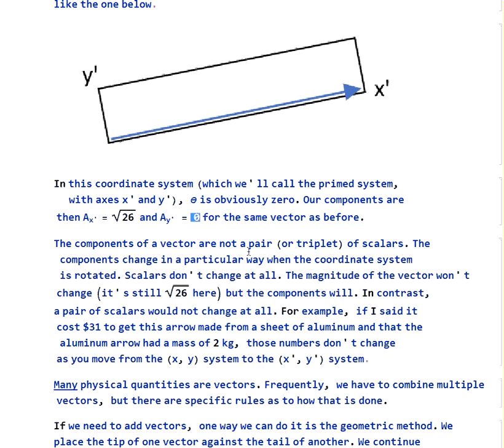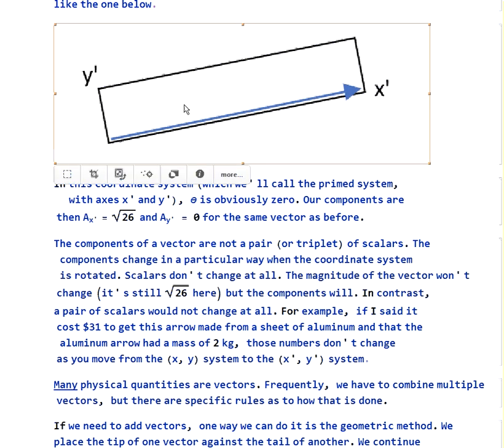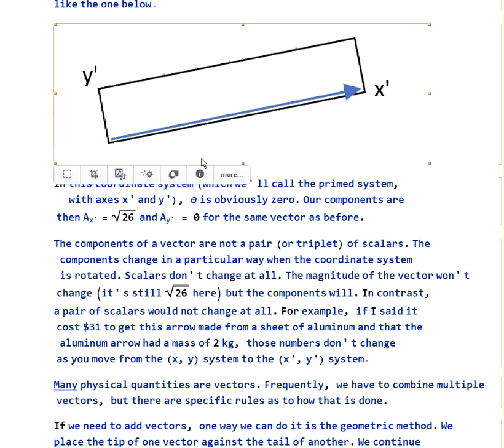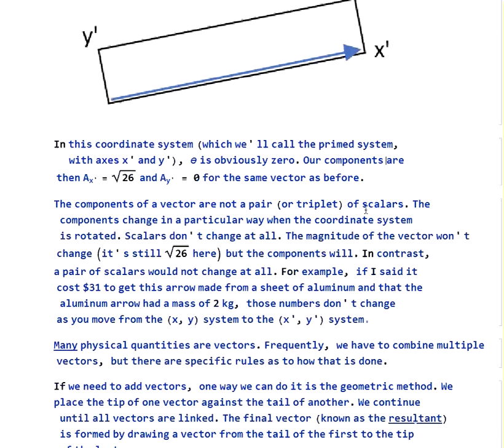So the vector components are changing in a particular way if we go to a new coordinate system. Scalars won't change. For example, if I told you I had a model of this arrow made out of aluminum, and it was 2 kilograms in mass and cost me $31, even if I move to a different coordinate system, those numbers don't change. The 2 kilograms and the $31 are scalars, so it doesn't matter which coordinate system I'm in, but the components do change.